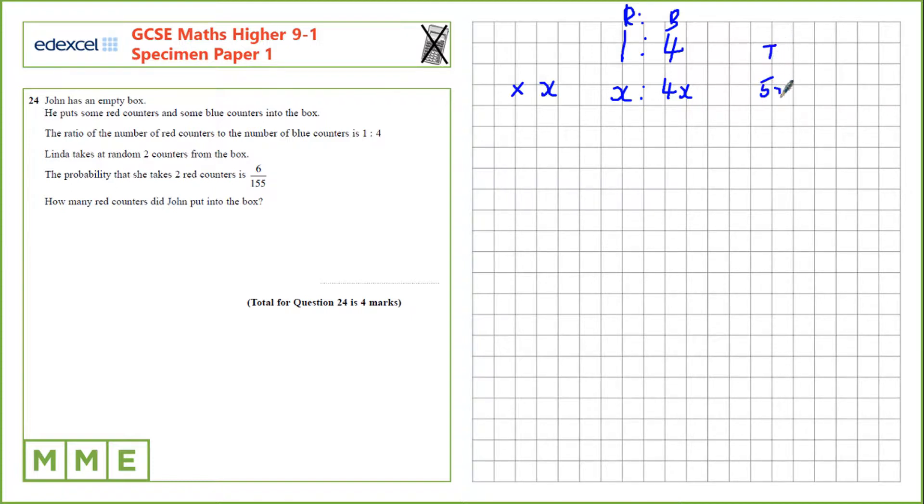We can calculate total 5x there. We can use that for our calculations going forward. The probability that Linda takes the first red is simple. That's 1 red, x, out of the total of 5x.